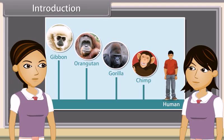What is the basis of these similarities and differences? They have a similar body structure. Not exactly, but the basis for similarities and differences is evolution of these animals from common life forms.